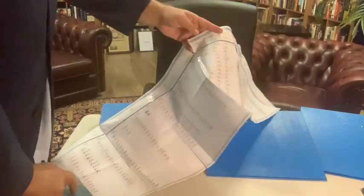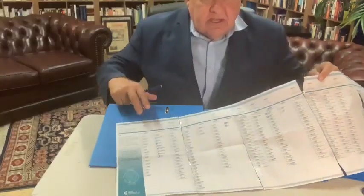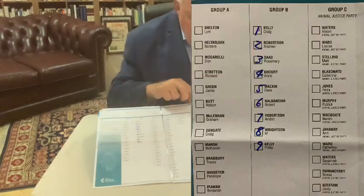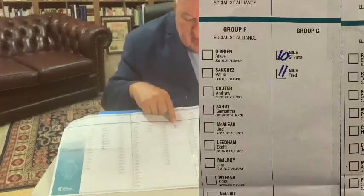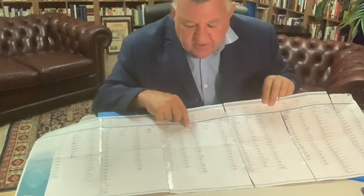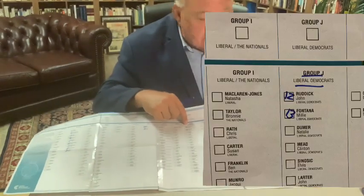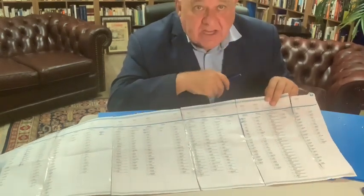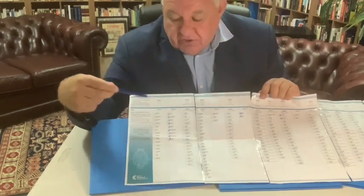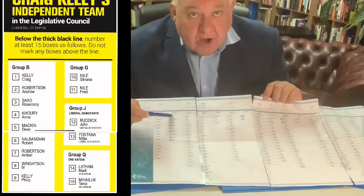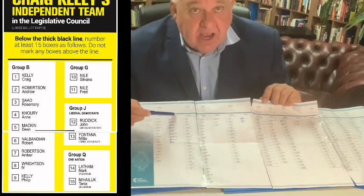So that's our recommendations on this paper. You can see there: 1 to 9 for Craig Kelly's team, 10 and 11 for Sylvana Nile and Fred Nile, 12 and 13 for John Ruddick and Millie Fontana from the Liberal Democrats, and 14 and 15 for One Nation Group. My recommendation is that you vote 15 numbers below this line, nothing above the line. 1 through to 9 for my team is listed here under Group B.